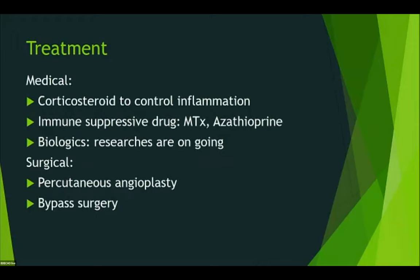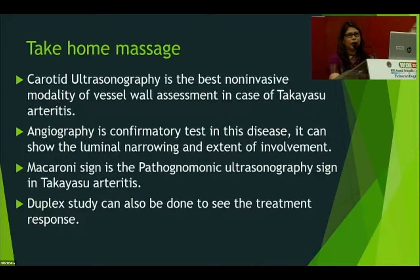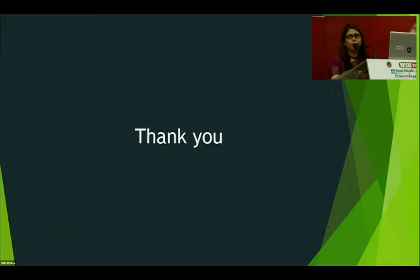Future directions include immunological and genetic studies. Treatment options: corticosteroids to control inflammation; immunosuppressive drugs such as methotrexate and azathioprine; biologics under ongoing research. Percutaneous angioplasty and surgical bypass are also options. Take-home messages: carotid ultrasonography is the best non-invasive modality for vessel wall assessment in Takayasu arteritis; angiography is the confirmatory test showing luminal narrowing and extent of involvement; the macaroni sign is the pathognomonic ultrasonographic sign; duplex study can assess treatment response. Thank you.